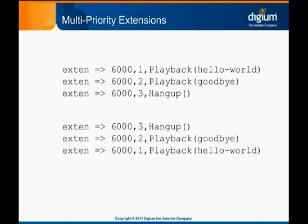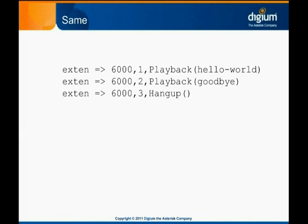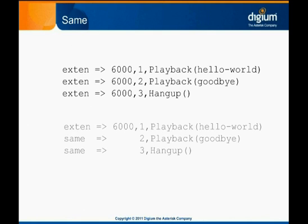Of course, different priorities for the same extension must be in the same context, or Asterisk won't associate them with each other. When you have one extension with several different priorities, it can be a little tedious to type or copy each priority separately, especially when you're updating the extension name. In Asterisk 1.8, there's a sort of shorthand that simplifies this. You can replace the exten-equals-greater-than extension-name part of the line with same-equals-greater-than, and have the line use the same extension name as the line immediately preceding it. The priority, application, and application arguments still have to be listed separately, but those are the parts that change anyway.